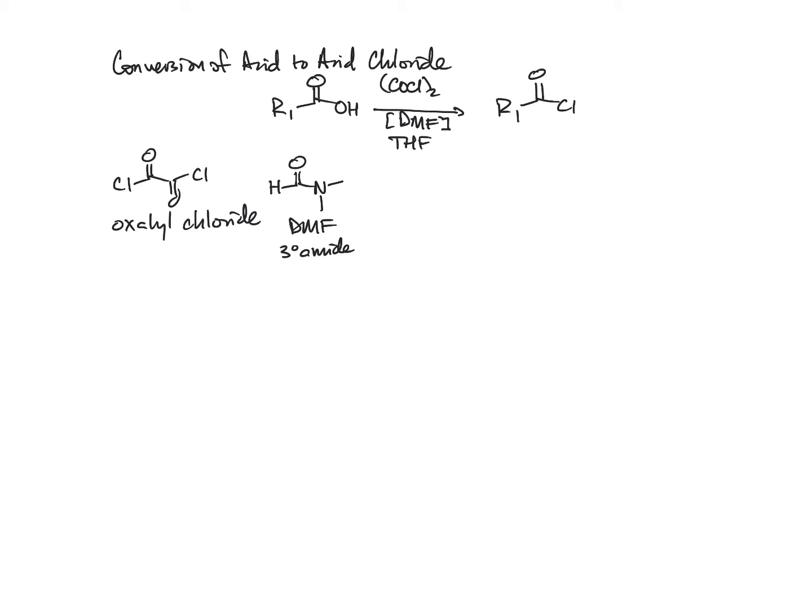So the mechanism of oxalyl chloride plus DMF overall loses CO2 and carbon monoxide as they react together. And then it forms an intermediate, which I'll call X, that reacts with the acid to form the acid chloride.